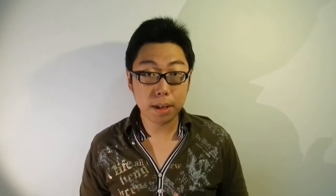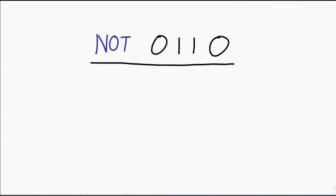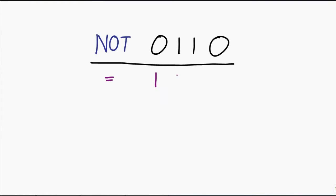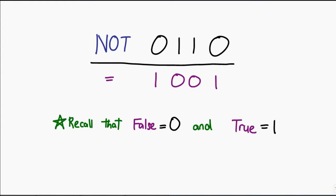I always like to talk about the NOT gate first, seeing as it's the only one that takes a single parameter. So let's take a look at NOT. Essentially, what we're going to do is run the NOT operation on a string of four bits. It's quite simple — you NOT each individual digit. That means the answer of NOT 0110 gives you 1001, which is an inversion of each one of the individual bits.